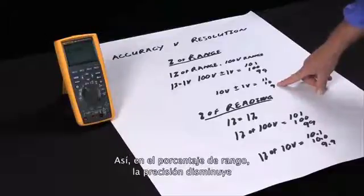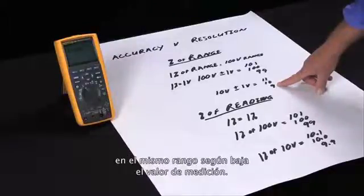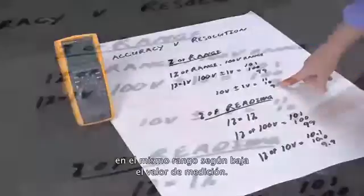So with the percent of range, the accuracy actually decreases on the same range as you go down with the measurement values.